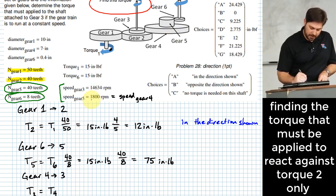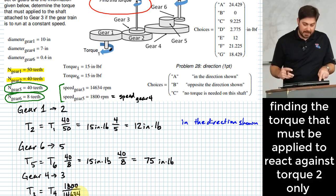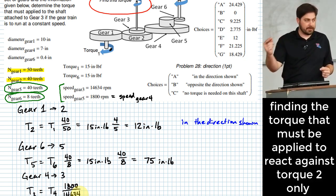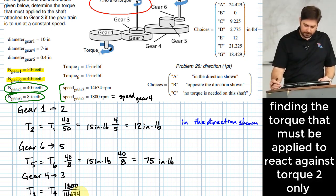So what I need to do then is multiply the torque that I had in five by this ratio of, let's see, 14,634. Oops. Nope. 1800. I should use it this way. 1800 over 14,634. Right? Because I'm going to have less torque in gear three than I would have in gear four because the speed is increasing so much, right? Increased speed, lower torque.